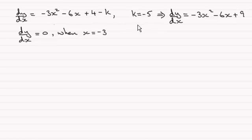k we found out was minus 5, so if we substitute that in, we've got dy/dx equals minus 3x squared minus 6x plus 9.